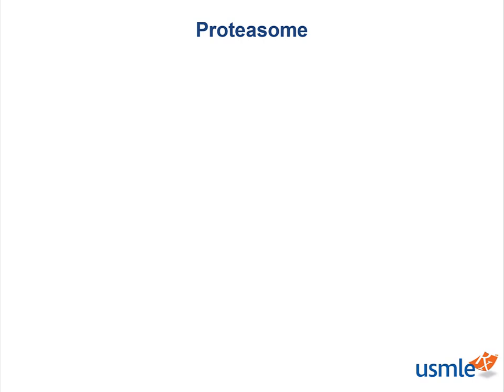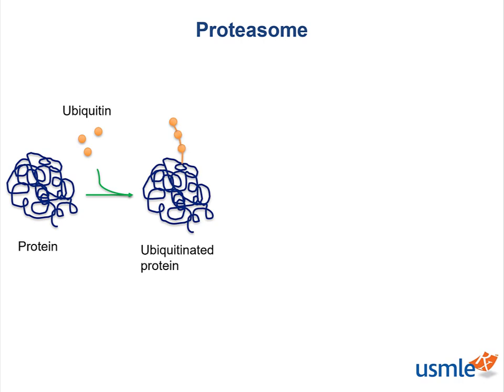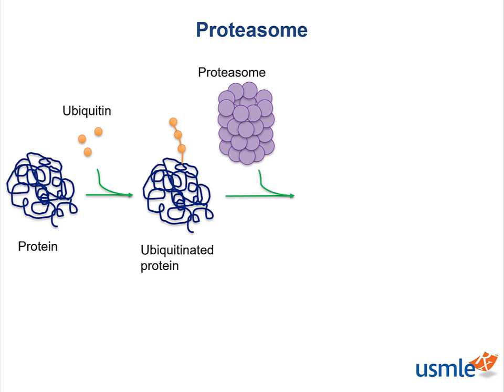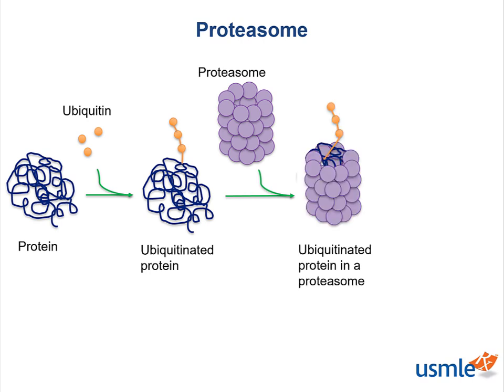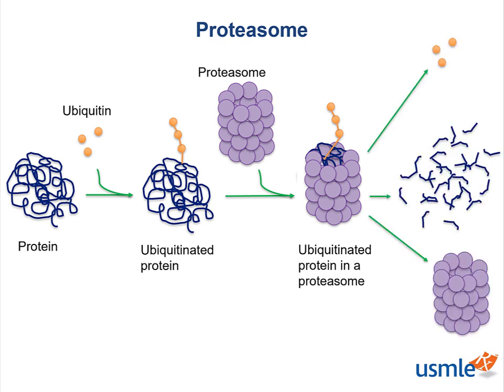Let me walk you through this with some visuals. Let's say we have this clump of protein, and for whatever reason we don't need it anymore — maybe it's defective, maybe there's too much of it. Along comes ubiquitin, and now we have a ubiquitinated protein. Now it's tagged, so it can interact with our barrel-shaped friend, the proteasome. The proteasome can degrade the protein, and the ubiquitin and proteasome can be used again.